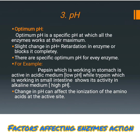The third and last factor is pH. Optimum pH is defined as the specific pH at which an enzyme works at its maximum level. When there is even a slight change in pH, retardation of enzyme action takes place. There is a specific optimum pH for every enzyme — for instance, pepsin, which works in the stomach, is active in low pH, while trypsin, working in the small intestine, shows activity at high pH.